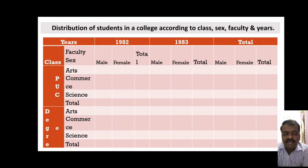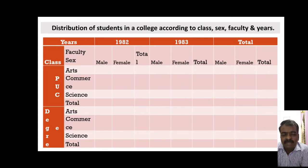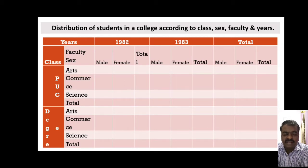When the number of characteristics exceeds three, that is more than three, we call it a many-fold table. If there are exactly three characteristics, then it will be called a three-way table. When a table contains exactly two interrelated characteristics, such a table is called a two-way table. Since this is a many-fold table, here we have taken exactly four characteristics.